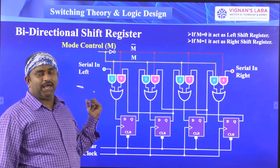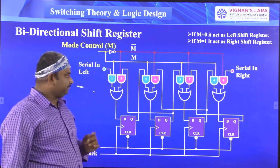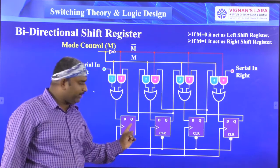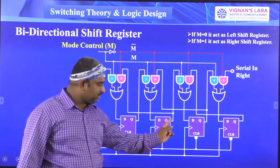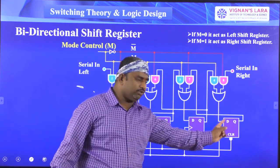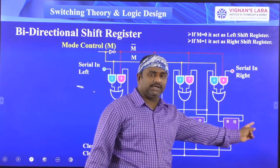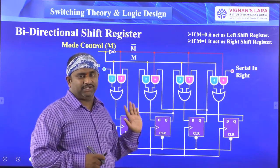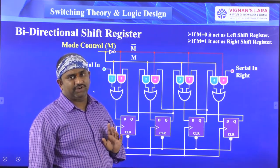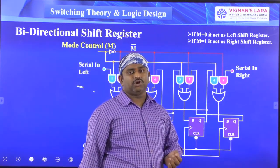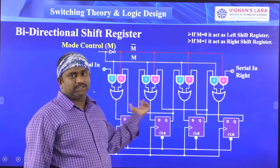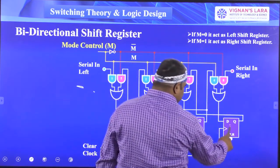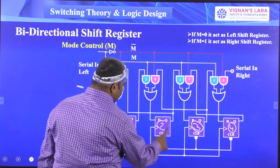In the left shift register, the first flip-flop output is connected to the second flip-flop input, the second flip-flop output to the third flip-flop input, the third flip-flop output to the fourth flip-flop input, and the data is collected at the fourth flip-flop output. When you give data at the left side it is called a shift-left register; when you give data from the right side it is called a right shift register.